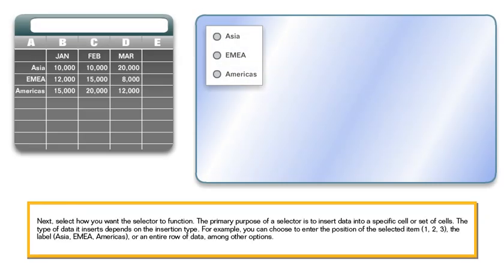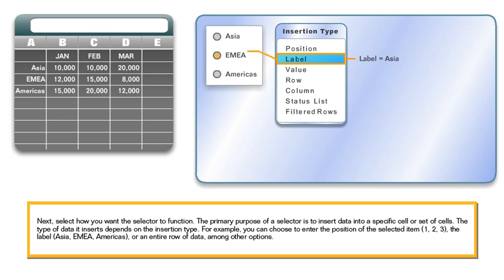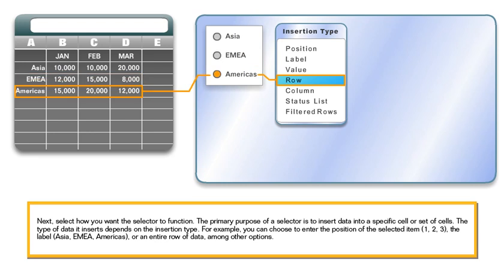Next, select how you want the selector to function. The primary purpose of a selector is to insert data into a specific cell or set of cells. The type of data it inserts depends on the insertion type. For example, you can choose to enter the position of the selected item, the label, or an entire row of data, among other options.